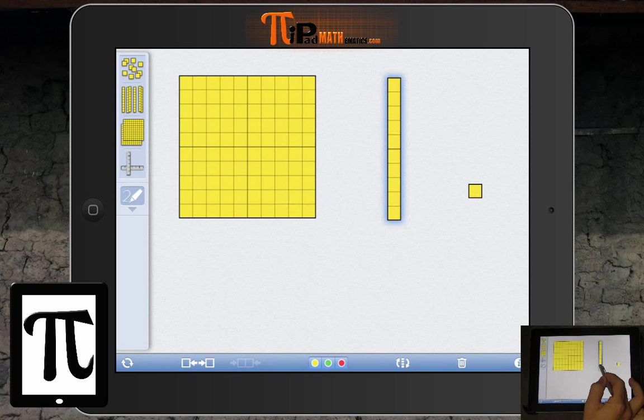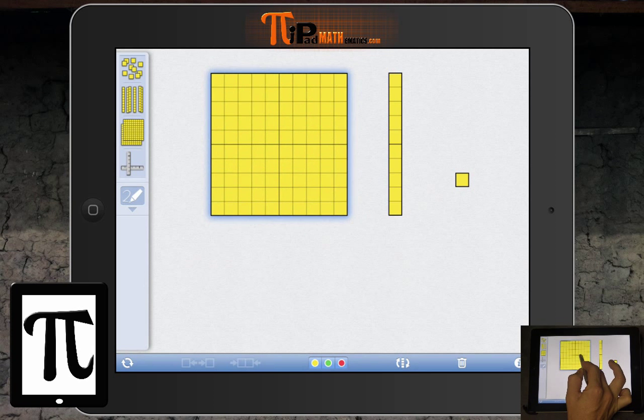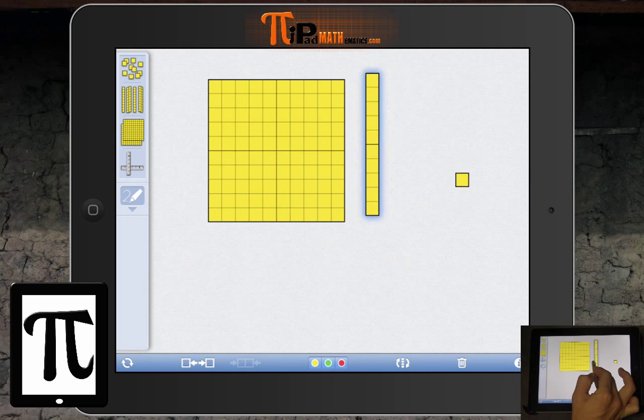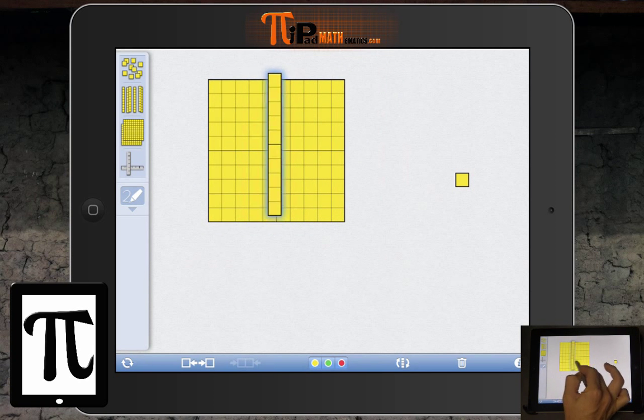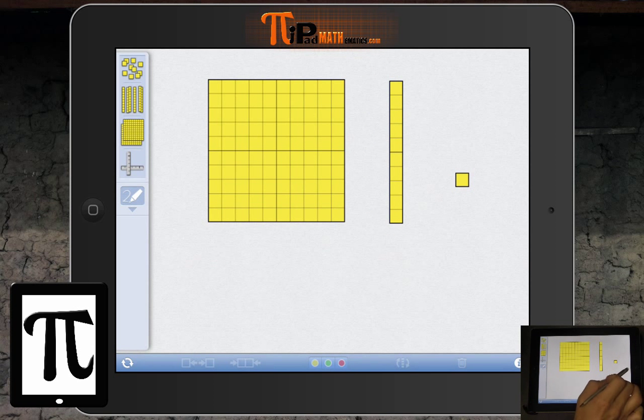The flat, or sorry, the long is equal to ten, because it equals ten of these units all the way up. And then this flat is 100 because it is ten of these tens, so ten tens, and that equals our base ten system.